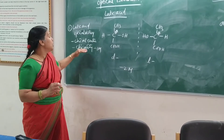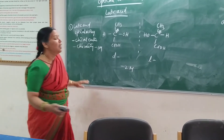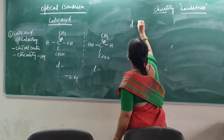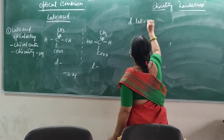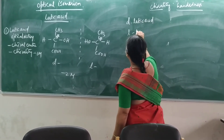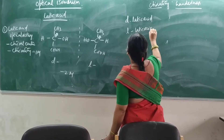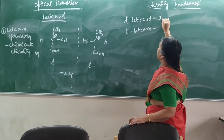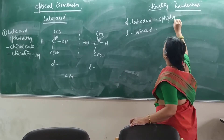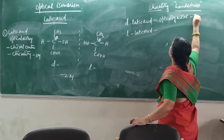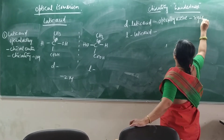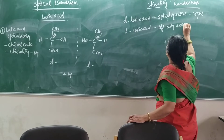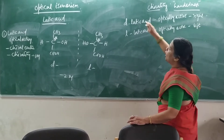Both conditions are shown. Therefore we call this optically active. You can classify them as D-lactic acid, which rotates plane polarized light towards the right, and L-lactic acid, which rotates plane polarized light towards the left.